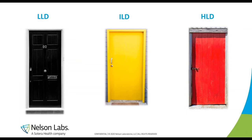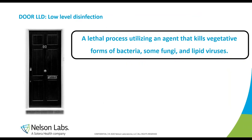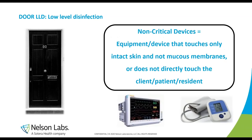When you start the road trip for your disinfection validation, you can choose three doors: black, yellow, or red — each representing a specific level of disinfection. The black door represents low-level disinfection, a lethal process that kills all forms of vegetative bacteria, some fungi, and some viruses. You can use this level when dealing with non-critical devices — those that do not directly come in contact with the patient, or only touch intact skin.